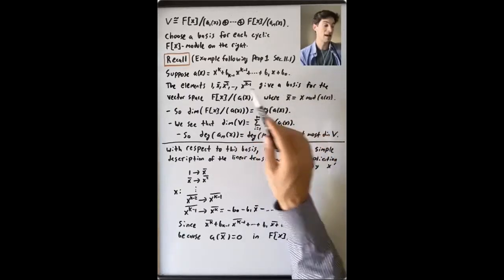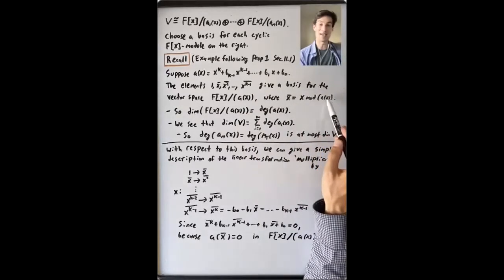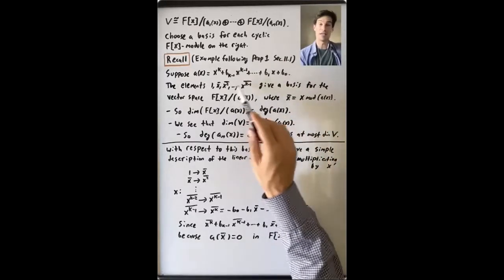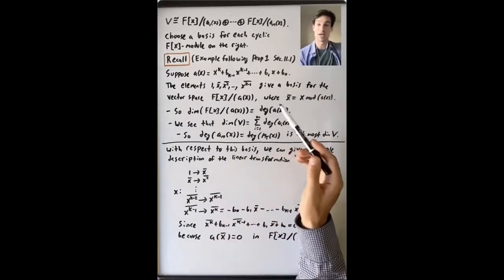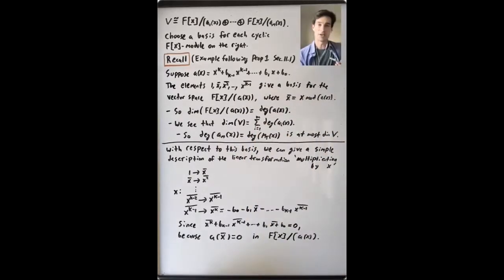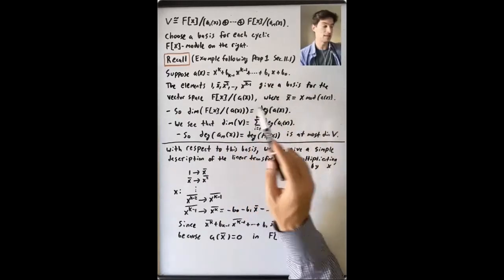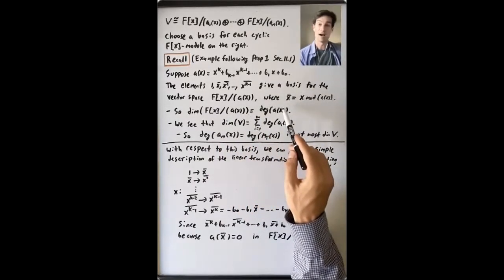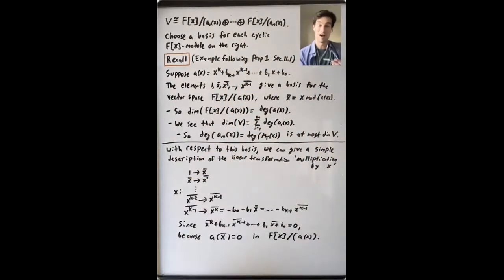Here, x bar is just x mod the ideal generated by a(x), so these are the images of the polynomials 1, x, x², x³ under the natural projection homomorphism from F[x] to this quotient. These form a basis, so in particular the dimension of this vector space is the degree of this polynomial. And when you take a direct sum of vector spaces, the degrees are just going to add.